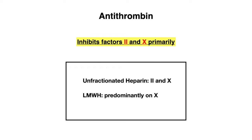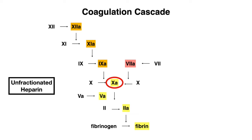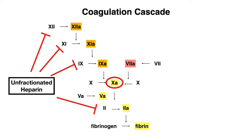Looking at the coagulation cascade again, both unfractionated heparin and low molecular weight heparin inhibit factor 10. But unfractionated heparin actually inhibits a few other factors as well — factors 12, 11, 9, 2, and factor 7. Unfractionated heparin is affecting pretty much all the factors involved in the intrinsic pathway, and that is correct. This is why we often use PTT to measure unfractionated heparin in the body — it's the most common lab value used to measure unfractionated heparin activity.